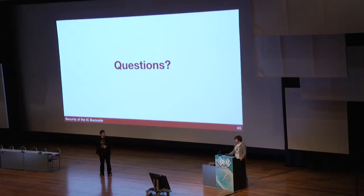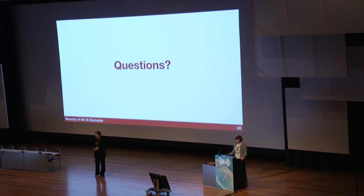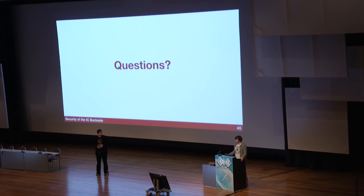Wenn man etwas Einfaches angreift, sind das weniger Chips. Wenn man es einmal gemacht hat: dieser Chip ist wahrscheinlich nicht nur an einer Stelle, sondern an ganz vielen Stellen benutzt. Man muss es oft nicht mehr wieder machen — man sieht den Chip und erkennt ihn in anderen Geräten wieder. Dieses Trainieren und Lernen ist nicht trivial. Das Reverse Engineering verbraucht ein paar Geräte.